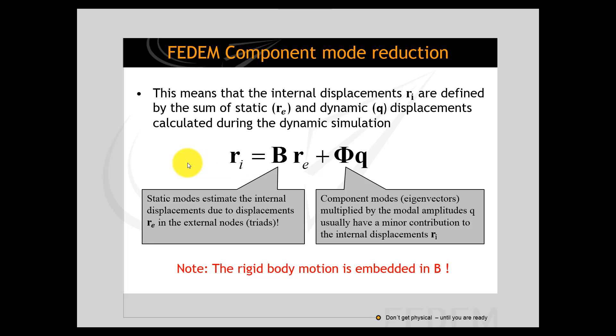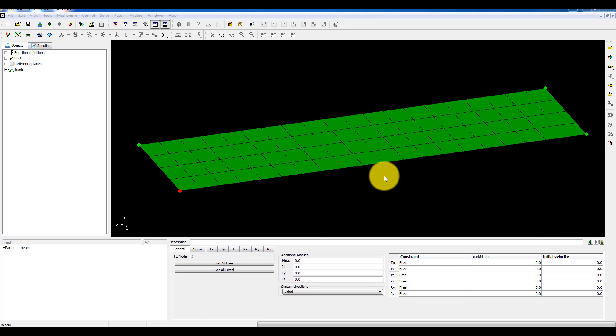Let's have a look at how it works in FEDEM. This is my FE model and as you can see I have four triads. That means four supernodes which give me a total of 24 external degrees of freedom and 24 static modes. And remember those static modes are capturing the rigid body motion in the FEDEM model.